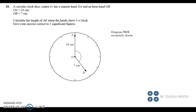Okay, right, number 10. A circular clock face, center O, has the minute hand OA. So this line OA here is the minute hand, and the hour hand is OB.